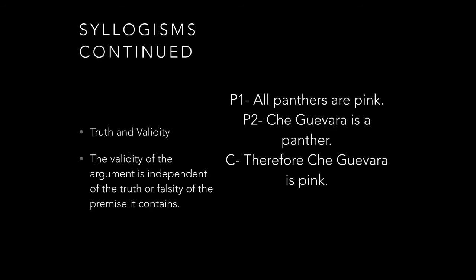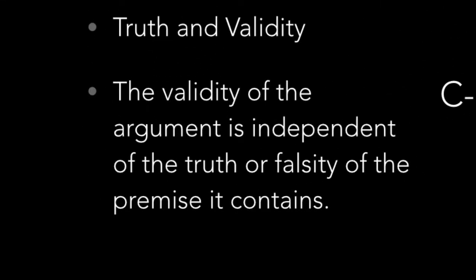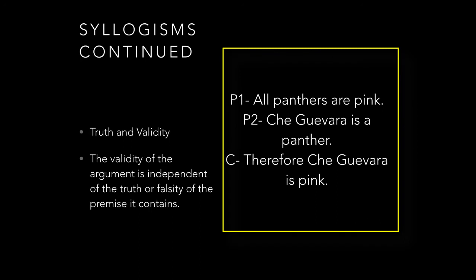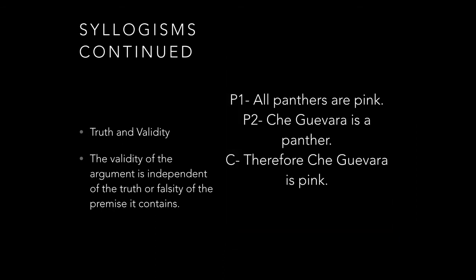So to get into that, let's go to another syllogism, and this is where we talk about truth and validity. This quote is really important: the validity of the argument is independent of the truth or falsity of the premise it contains. So a valid argument and a true argument are not the same thing, and that's really important to understand. For example, here is an argument. Premise one: all panthers are pink. Premise two: Che Guevara is a panther. Therefore, Che Guevara is pink. Now, this is a valid syllogism. If you look at the conclusion, you can logically get that information or deduction from premise one and premise two. However, Che Guevara is a person, and he is a panther from the Black Panther movement of the 1960s, and he is not pink. So it's an untrue argument, but a valid argument. That's kind of confusing, but we need to make sure we get both those two terms independent of each other.